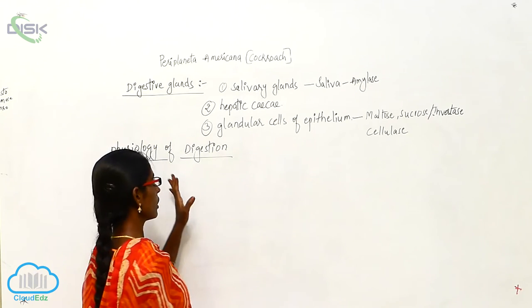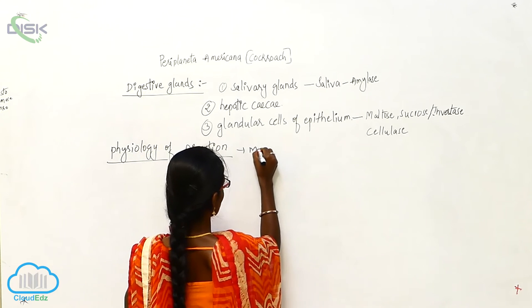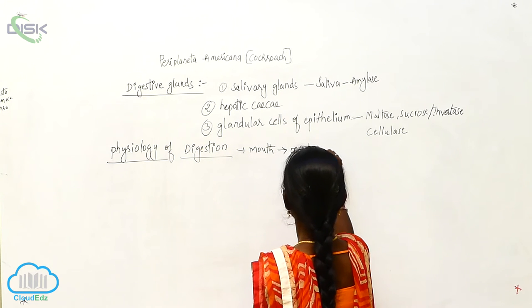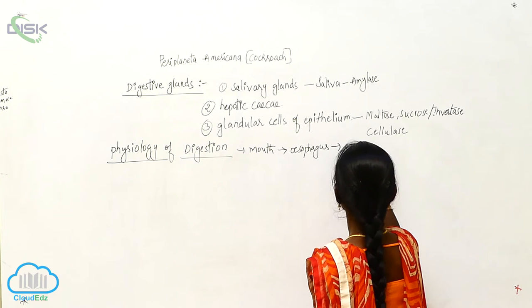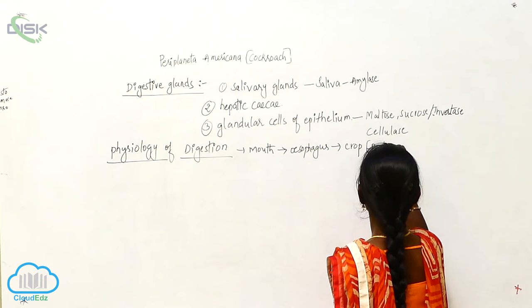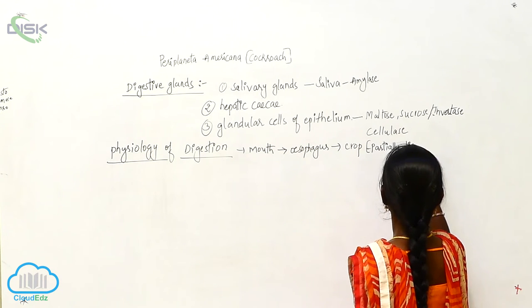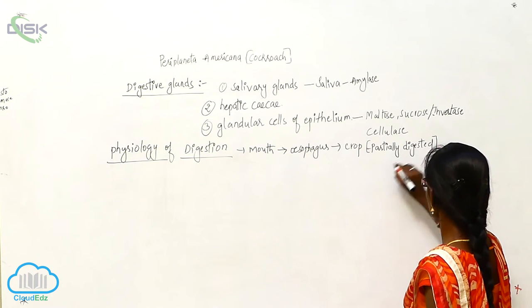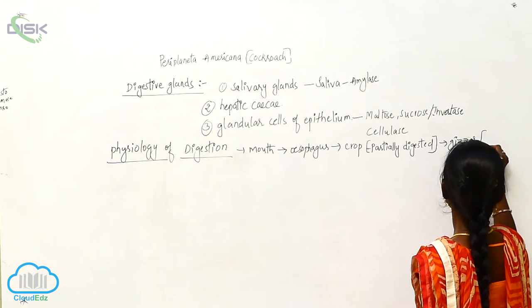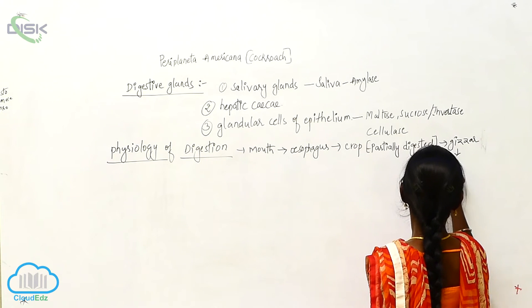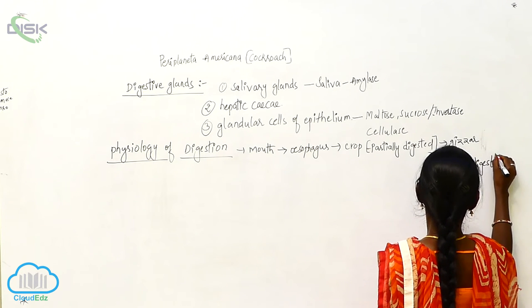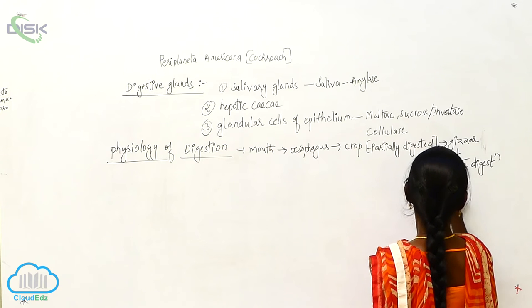So the cockroach takes the food material into mouth. It will go to the esophagus. So after that it will reach to crop. In this crop, the food material undergoes partial digestion. So here the partially digested food material goes to gizzard. So in this gizzard, the food material undergoes complete digestion.